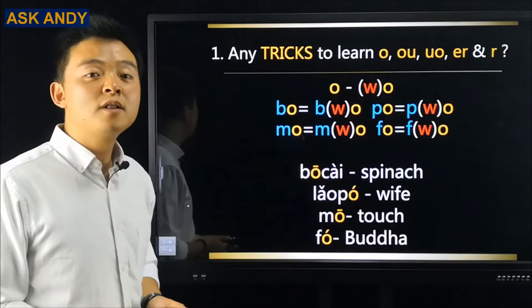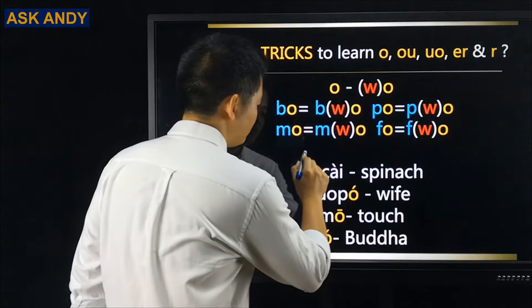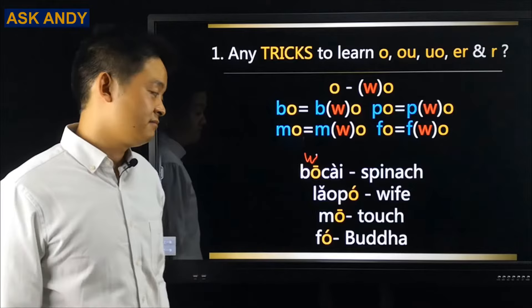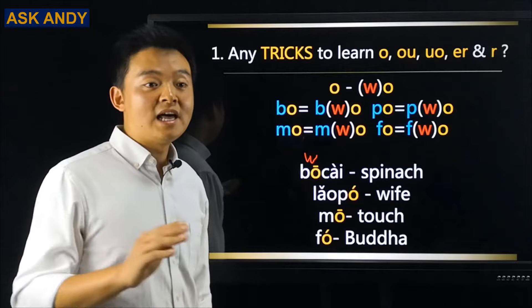For example, spinach is BOCAI. When you see PO, your first impression might be to say it like a plain 'o' sound — but that's not correct. The trick is to make an extra W there, so it becomes PO (pronounced 'pwo'). That's the correct one. The same trick applies: PO becomes PWO. So 'wife' in colloquial informal speech uses this — make a W there. And 'touch' and 'Buddha' (FO) — same rule, make an extra W.